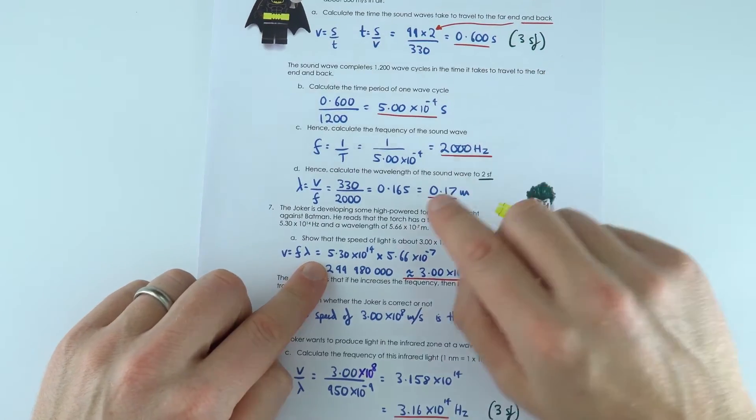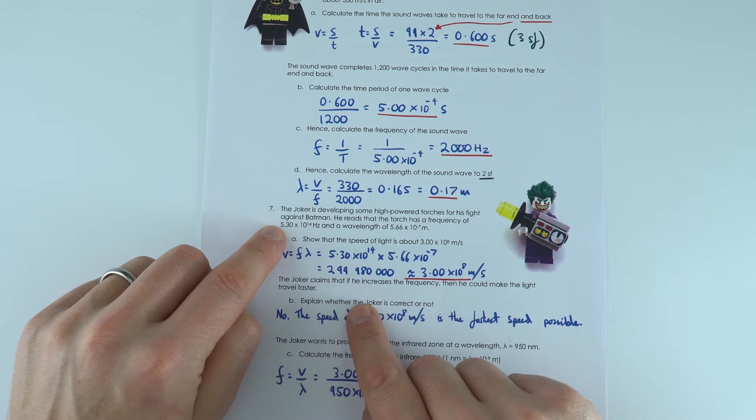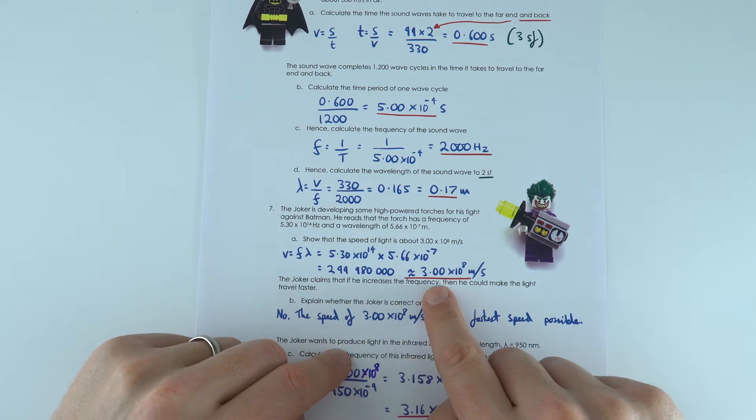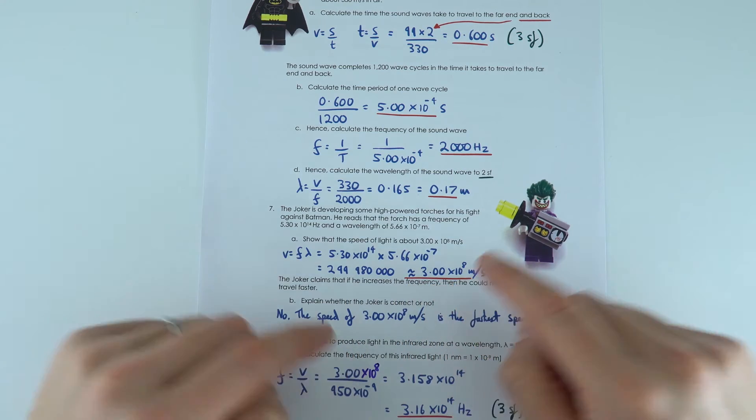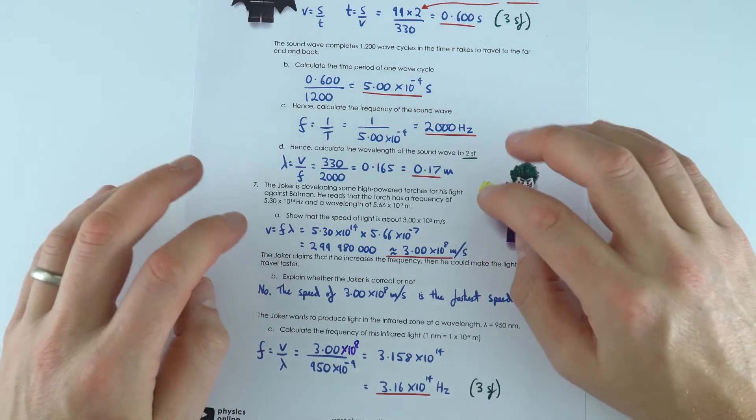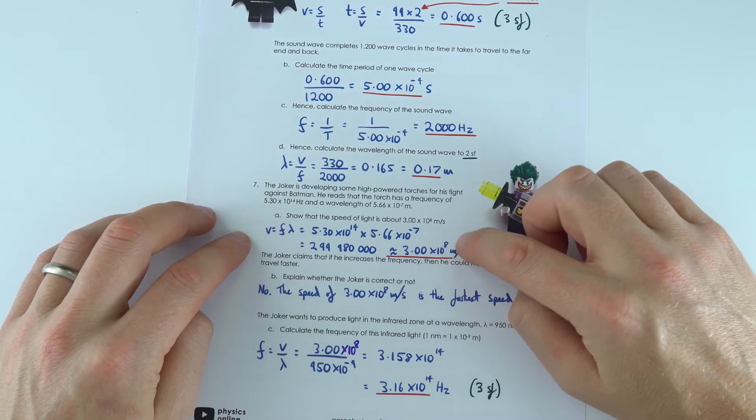For this one down here, the first thing we did was we just multiplied the frequency times the wavelength to find this answer here, which is about 3.00 times 10 to the 8. That is a really important number. Again, it's the speed of light, but it's also the fastest speed that is possible for anything to go. Nothing can travel faster than that.